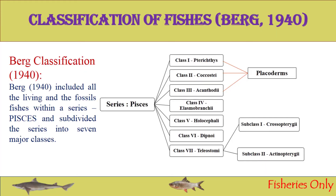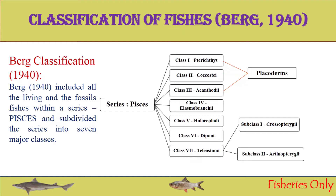The earliest classification was proposed by Müller in 1844, who proposed seven subclasses. Berg proposed his classification in 1940 and included all living fishes as well as fossil fishes in a series. Berg subdivided this series into seven major classes — that is, Series Pisces with seven major classes.